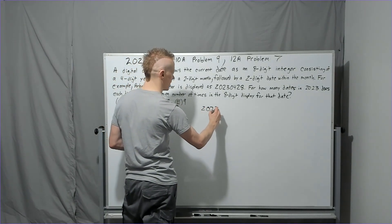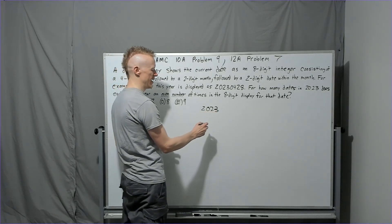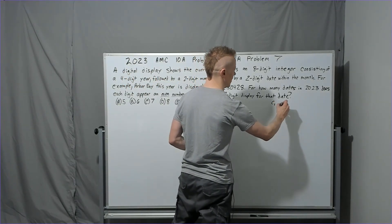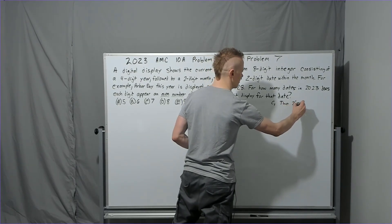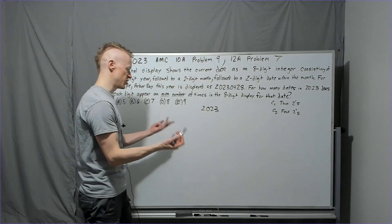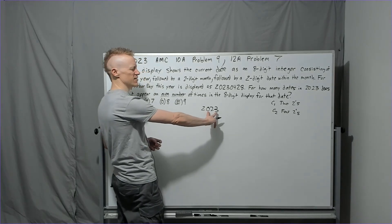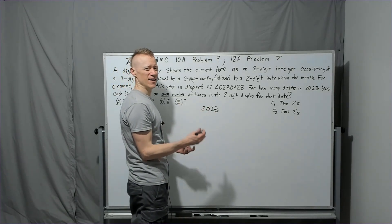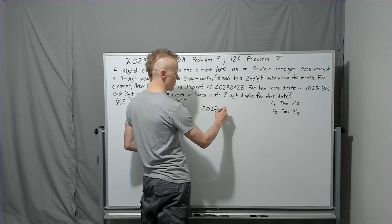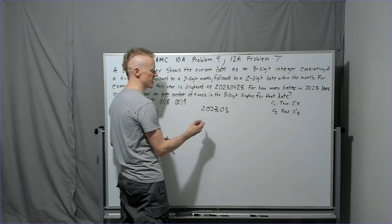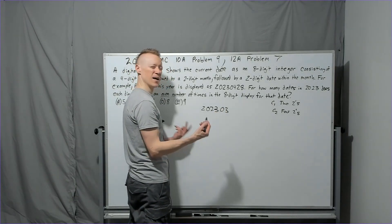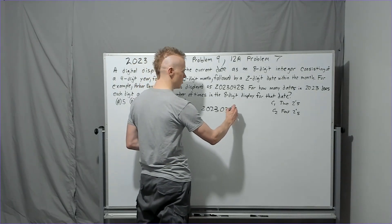We know the year is 2023, giving us two 2s already. We could end up with two or four 2s total. But I notice the 0 and 3 each appear only once in '2023', so I need at least one more 0 and one more 3. The natural approach: place the extra 0 and 3 in the month — that's March (03). Then the day must supply two matching digits, which can only be 11 or 22.